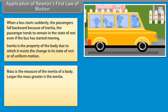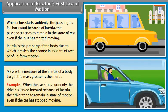Mass is the measure of the inertia of a body. Larger the mass, greater is the inertia. Example: When the car stops suddenly, the driver is jerked forward because of inertia. The driver tends to remain in the state of motion even if the bus has stopped moving.